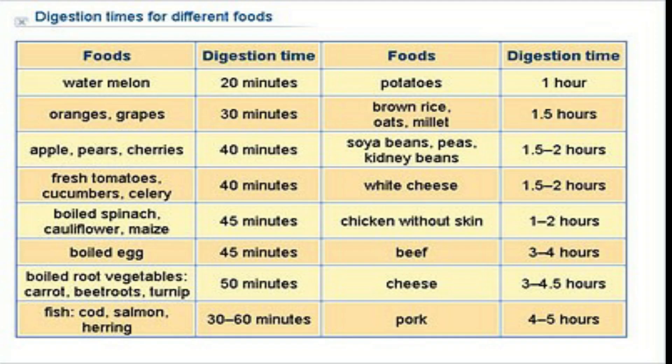Now I'll explain the time taken to digest different types of food. Watermelon needs just 20 minutes to digest, while potatoes need one hour. Oranges and grapes need 30 minutes. Brown rice, oats, and millet need 1.5 hours. Apples, pears, and cherries need 40 minutes. Soybeans, split peas, and kidney beans need 1.5 to 2 hours to digest.